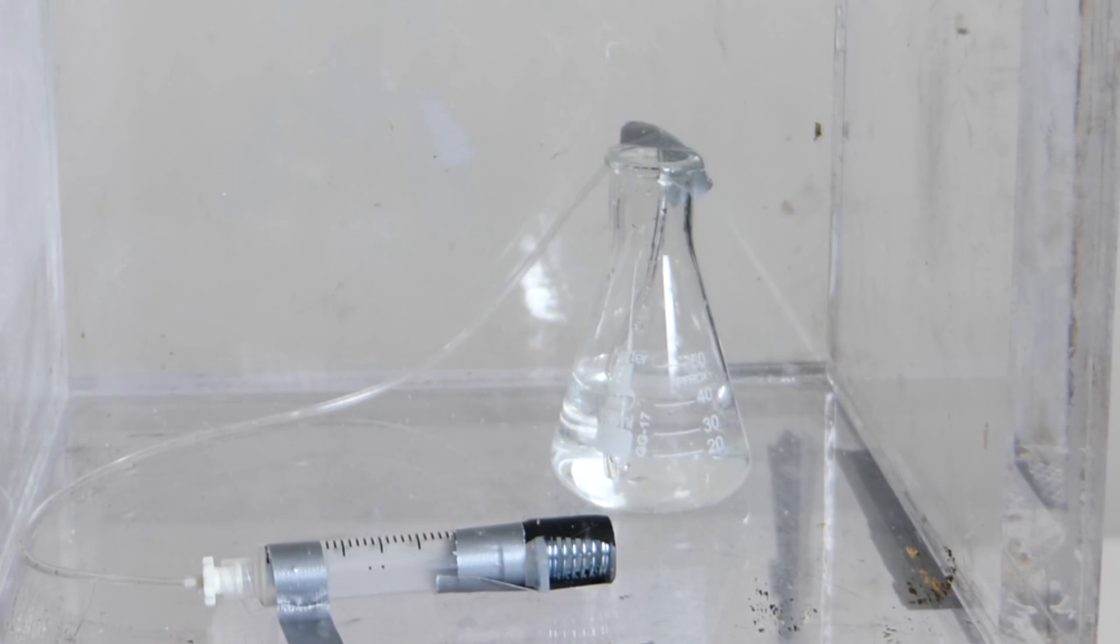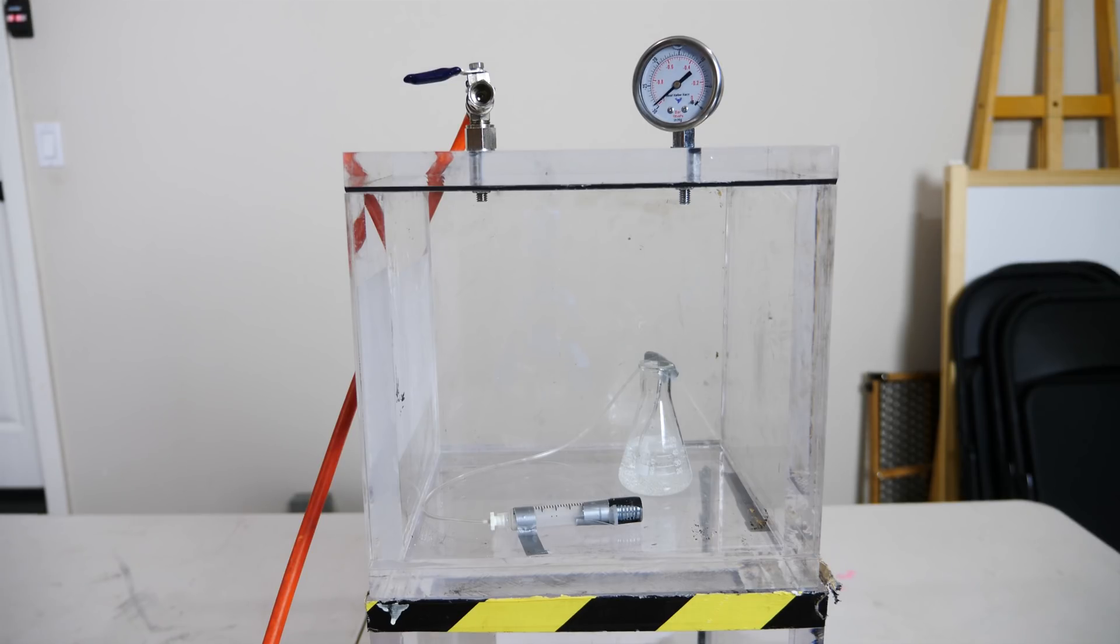So you can see bubbles coming out of the end of the tube there. That's because the air that's in the tube in between the plunger and the end of the tube is expanding. And so it's bubbling out of the end there under the vacuum.